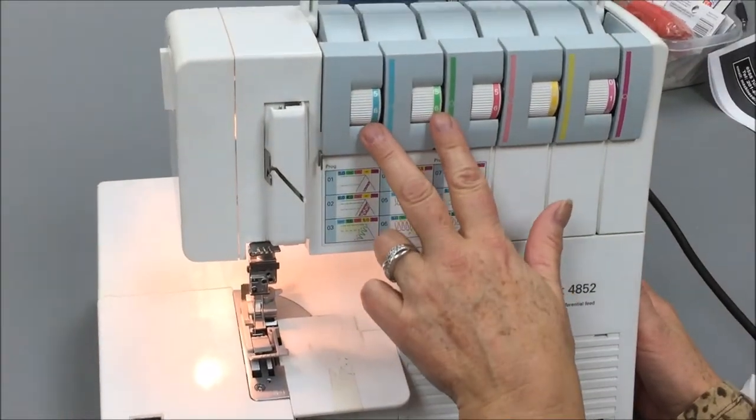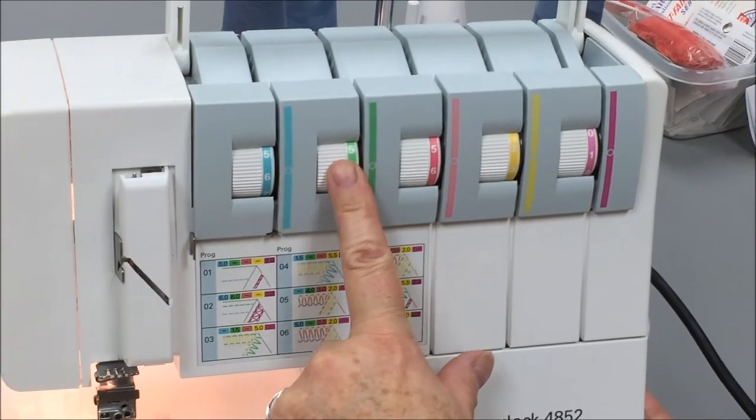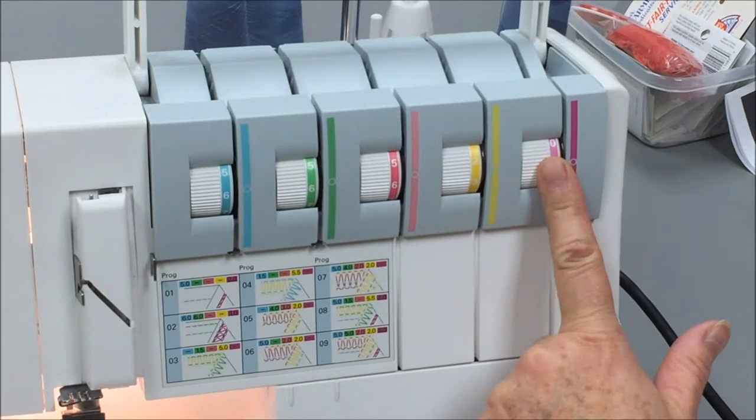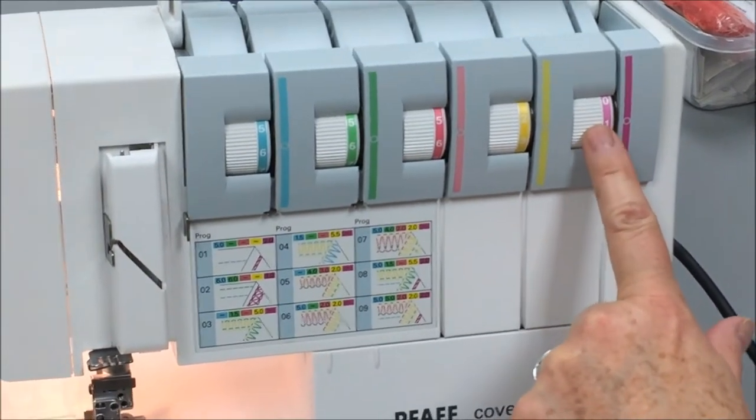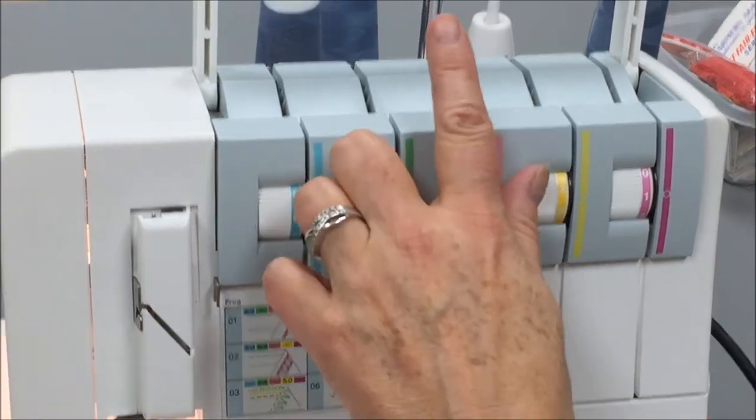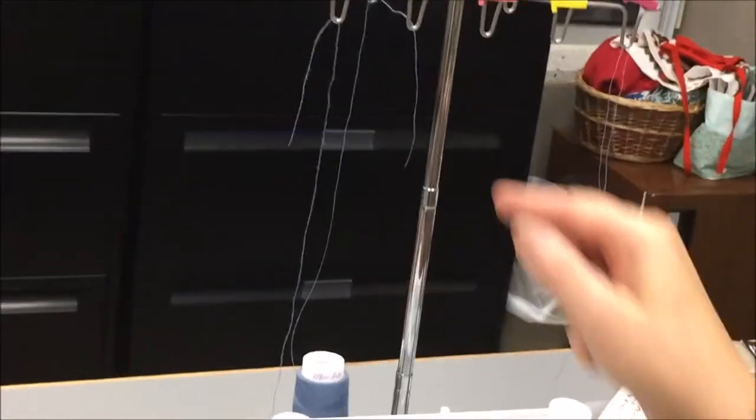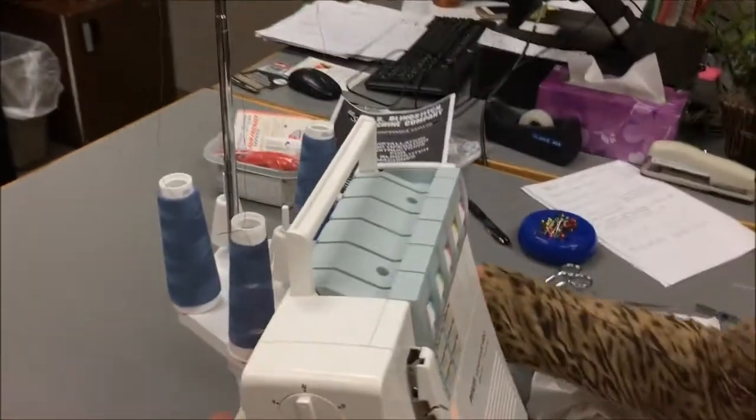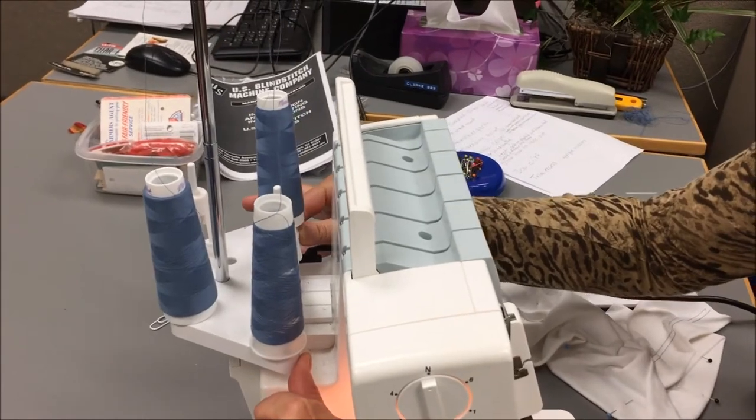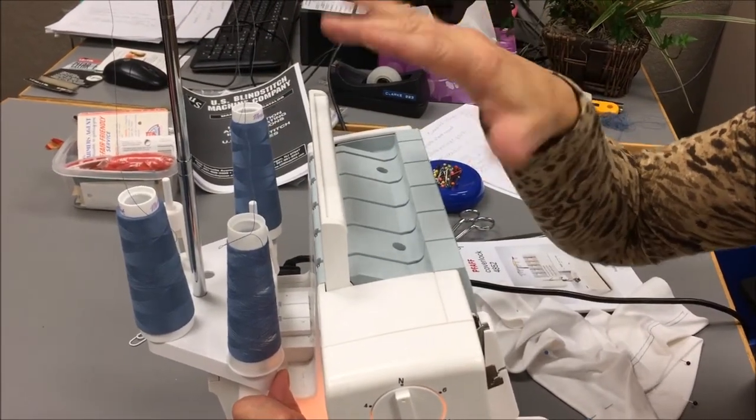We have our tension discs here. This is for the left needle, this is for the right needle. We are going to skip the upper and lower loopers and go clear over here to the far right, the cover stitch looper. A couple of things we need to get set up: we need to make sure our telescopic thread guide is pulled all the way up and then here on the back we need to make sure that the spool table is pushed all the way back. That's very important to let the threads flow freely.